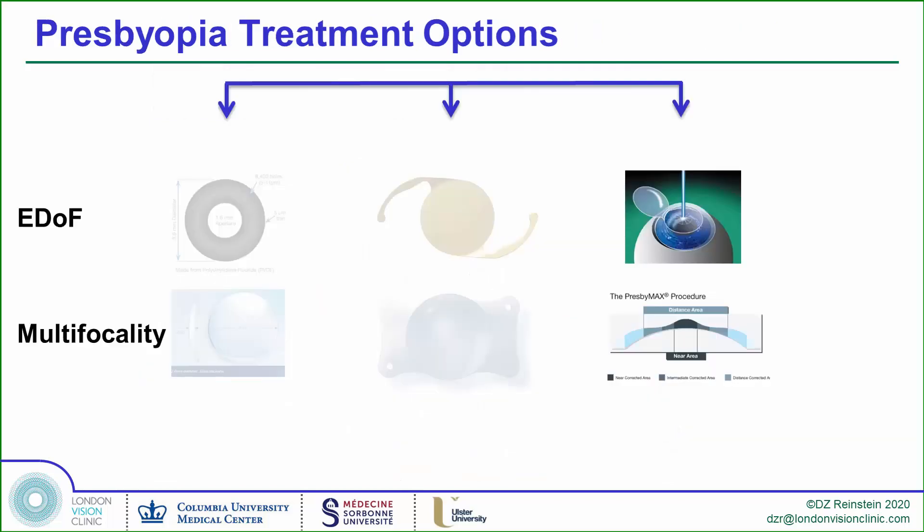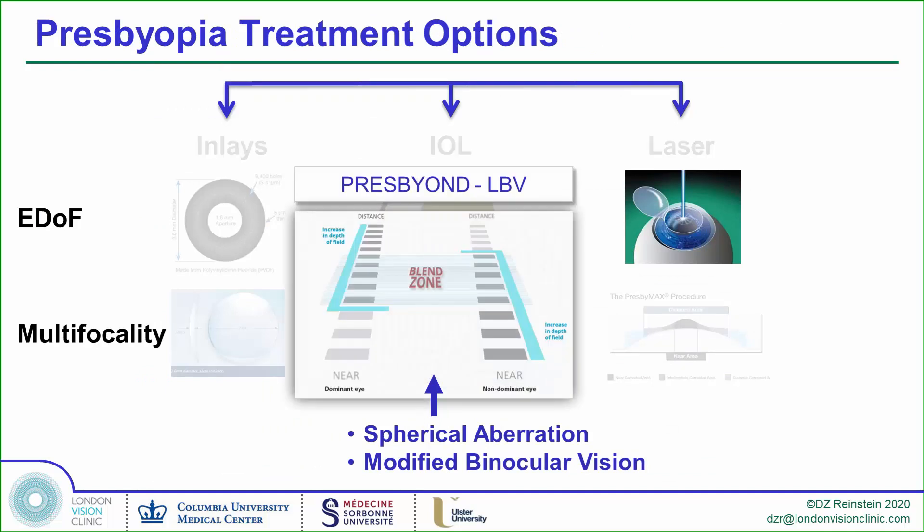What I'm going to focus on is a better option: using spherical aberration in the right doses to improve the depth of field, combined with a micro-anisometropia to provide modified binocular vision.